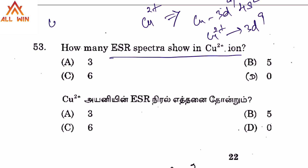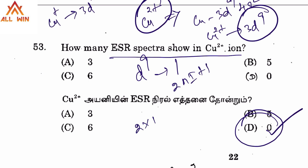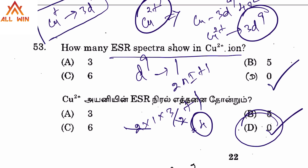For Cu+, with 3d10 and no unpaired electrons, the number of ESR lines is 0 — option D. For Cu2+ with 3d9, there is one unpaired electron. Using the formula 2nI + 1, where n=1 and I=3/2: 2 × 1 × 3/2 + 1 = 3 + 1 = 4. So Cu2+ gives 4 ESR lines. The answer is 4.